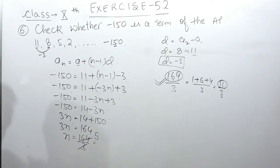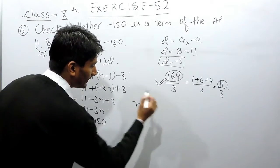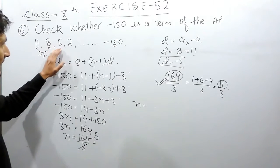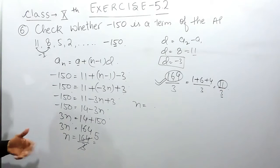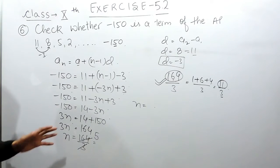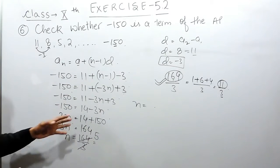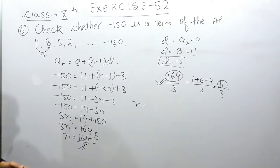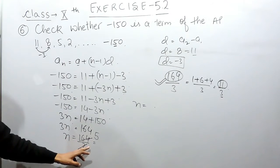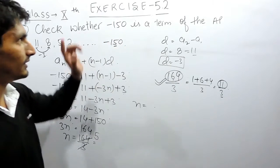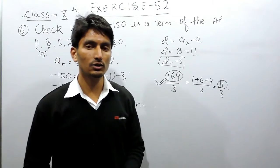So we are saying that the n will be in decimals, and that is not possible. If I am saying there is an AP and there are certain terms in that AP, that term cannot be 1.5. I can't say there are 2.5 terms in this AP. The terms must be in complete numbers. So in this case, the n is in points, so we can confirm that this is not a term in this AP. So this is how we can solve this question. Thank you.